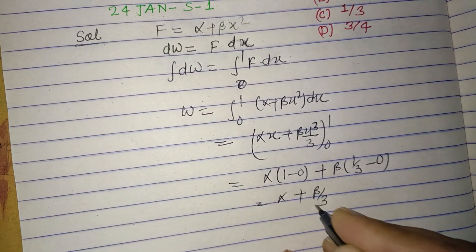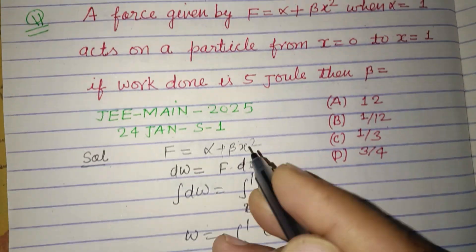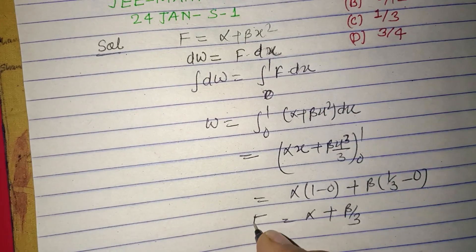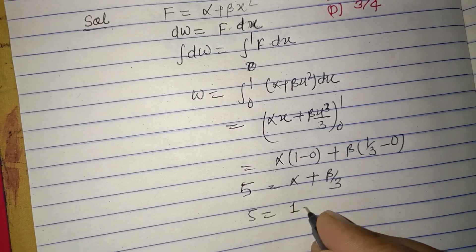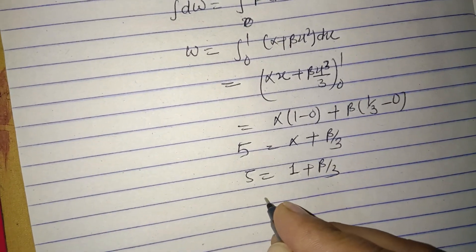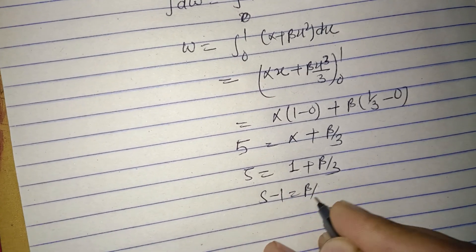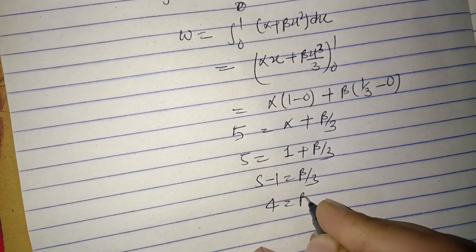And W, work is given to us as 5 joules. So putting this: 5 = α + β/3. Since α = 1, we have 5 - 1 = β/3, that is 4 = β/3.